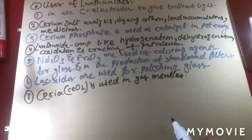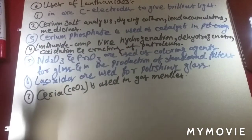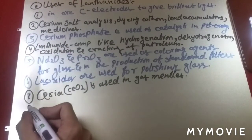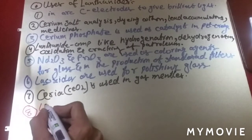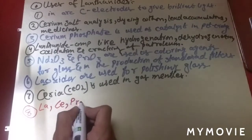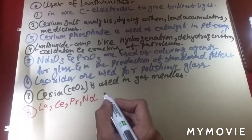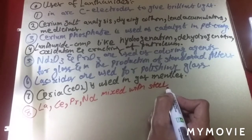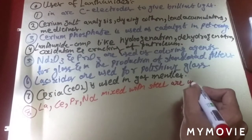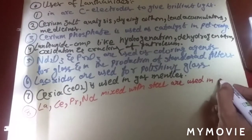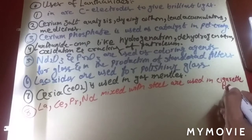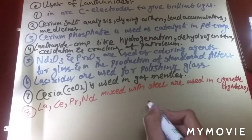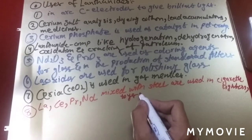La, Ce, Pr, Nd mixed with steel are used in cigarette lighters, toys, and flame-throwing tanks, etc.